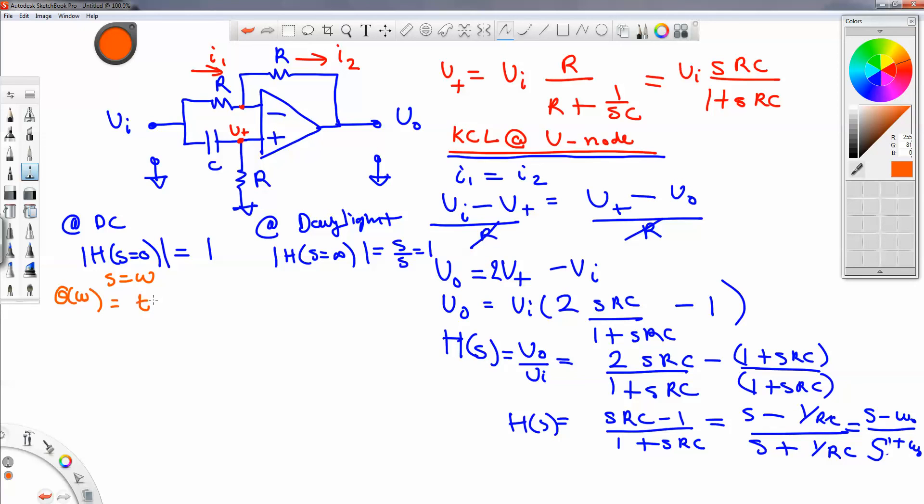So phase now is a function of the radio frequency. It goes to the tangent inverse of omega over minus omega naught. Right. Because this is the imaginary term, and this is the real term. So the phase is the tangent inverse of the imaginary over the real term, minus tangent inverse of omega over omega naught.